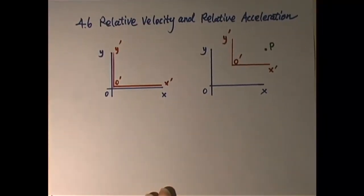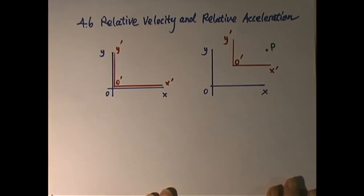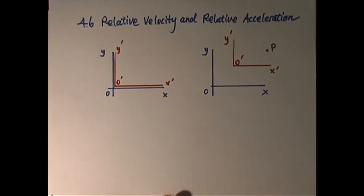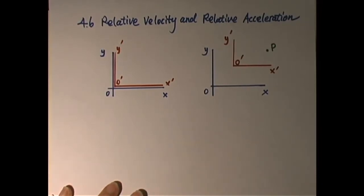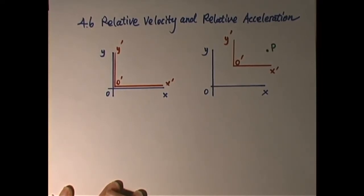Our next topic is relative velocity and relative acceleration. So everything is relative when we move. For example, we say the velocity of a car is 55 miles per hour, 25 degrees north of east. That 55 miles per hour is obviously with respect to the ground.